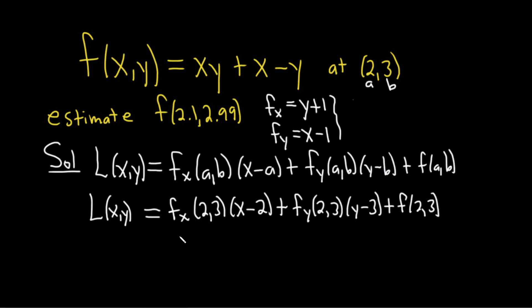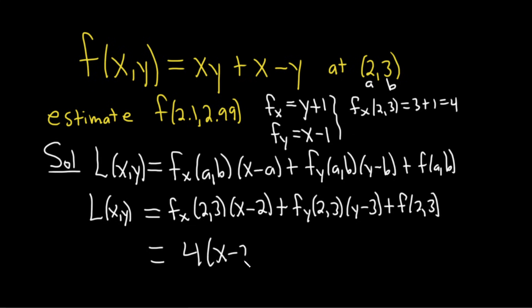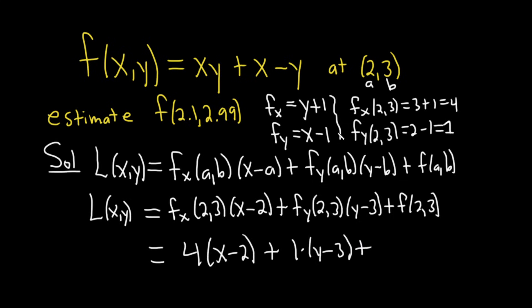Let's keep going. fx at (2,3): plugging in y=3, it's 3 plus 1, which is 4. So that's 4 times (x minus 2). Then fy at (2,3): x is 2, so it's 2 minus 1, which is just 1. That's 1 times (y minus 3). Then f of (2,3): plugging in 2 for x and 3 for y, we get 2 times 3 plus 2 minus 3, which is 6 minus 1, so that's 5.